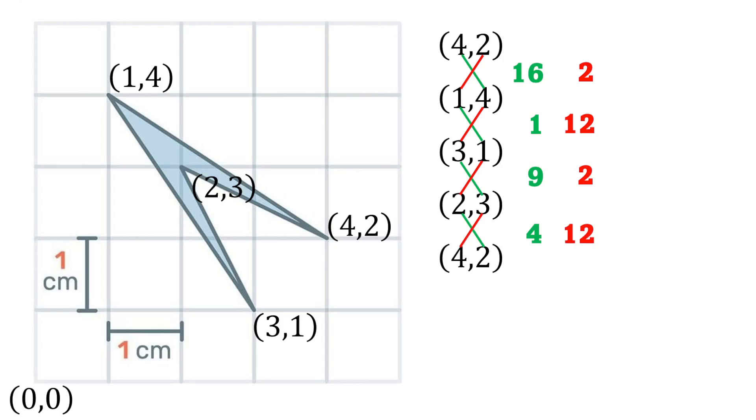Then the calculations proceed as follows. All of the ones that are in green on the left hand side there, I'm going to add those up. So 16, 1, 9 and 4 adds up to 30. Then all the ones in red I add those up as well. 2, 12, 2 and 12 adds up to 28.